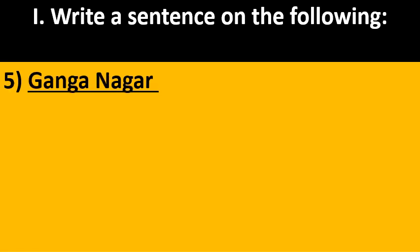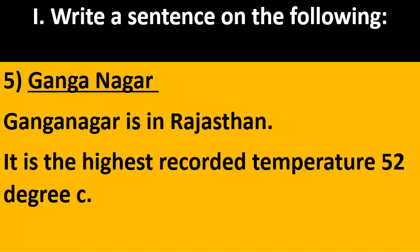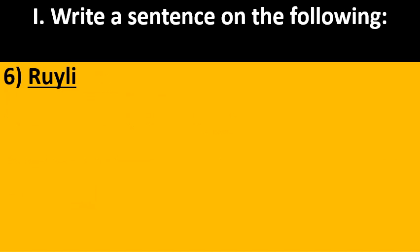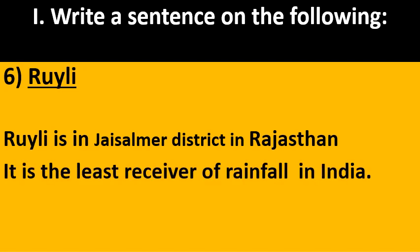Ganganagar. Ganganagar is in Rajasthan. It has the highest recorded temperature, that is 52 degrees Celsius. Roily. Roily is in Jaisalmer district in Rajasthan. It is the least receiver of rainfall in India.